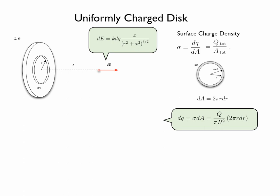With that expression we can go back to the electric field due to a uniformly charged ring and write that field equal to k times big Q over π big R squared, times 2π little r dr, times x over little r squared plus x squared to the power of three halves.